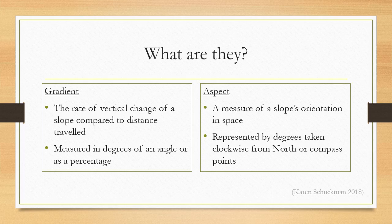Aspect is a measure of a slope's orientation in space and is represented by degrees taken clockwise from north or compass points.